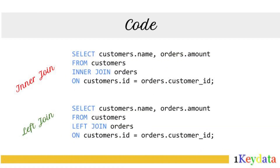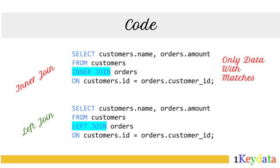Notice that the syntax for both joins is very similar. The key difference lies in the type of rows returned — only matching rows for inner join versus all rows from the left table for left join. Use an inner join when you only need data with matches, for instance finding customers who made purchases. Use a left join when you need to include unmatched data, such as listing all customers, even those without orders.